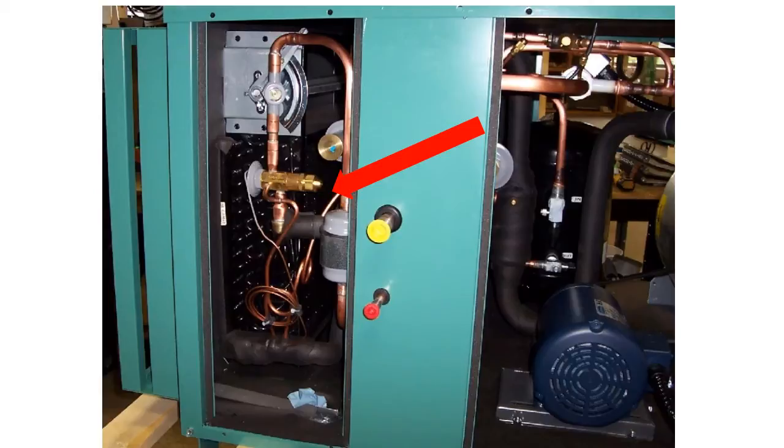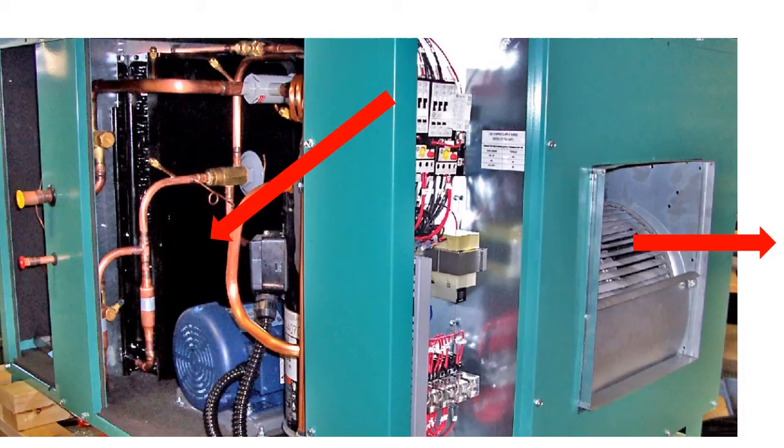Air enters the dehumidifier where it first passes through the evaporator coil, which drops the temperature of the air below the dew point before it passes through the reheat or condensing coil. After passing through the reheat coil, the air leaves the dehumidifier both warmer and drier than it entered, as in a conventional basement dehumidifier.